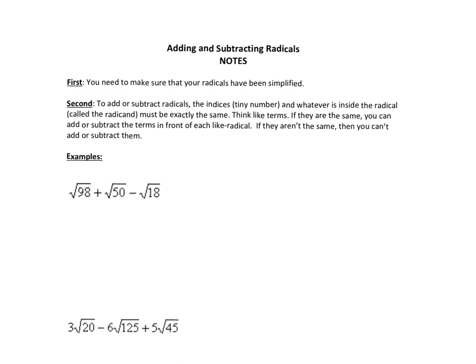I'm going to try and make this as quick and painless as possible. Your notes are over adding and subtracting radicals. There are two major steps when you do this. The first one is to make sure that everything has been simplified — whether we take the number and do a factor tree and factor out certain numbers, or we plug things into a calculator and find the factors, find the perfect squares. The very first thing we have to do every single time is make sure that our radicals have been simplified. That's big thing number one.